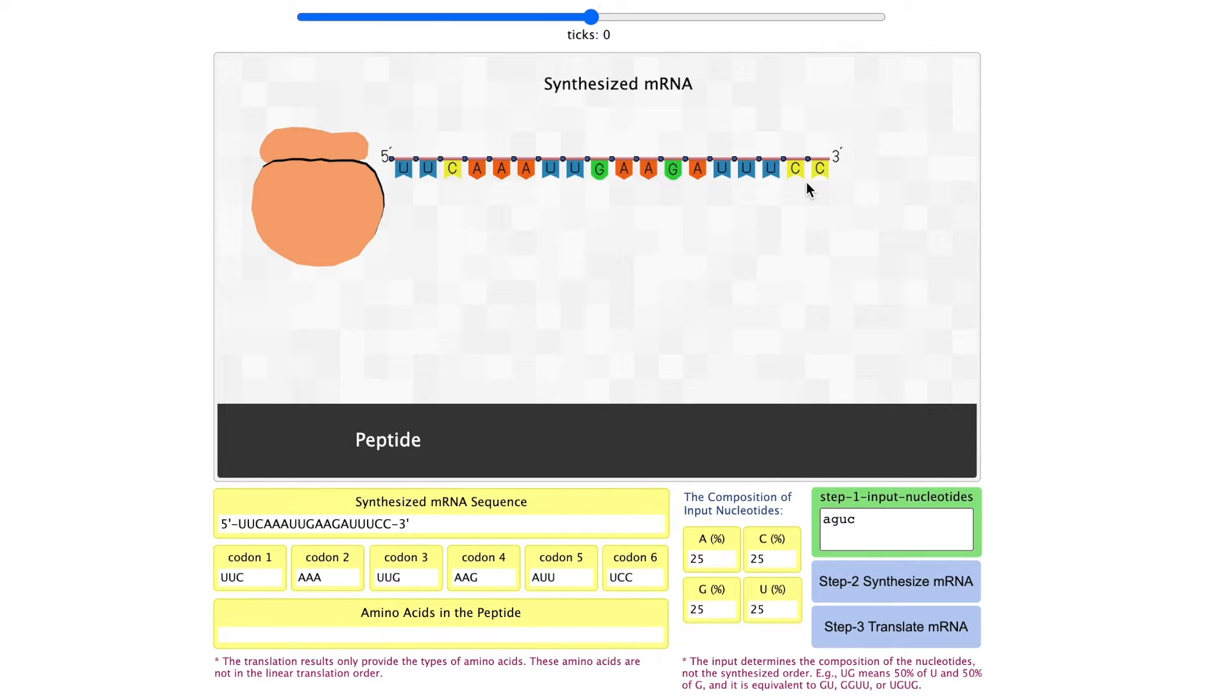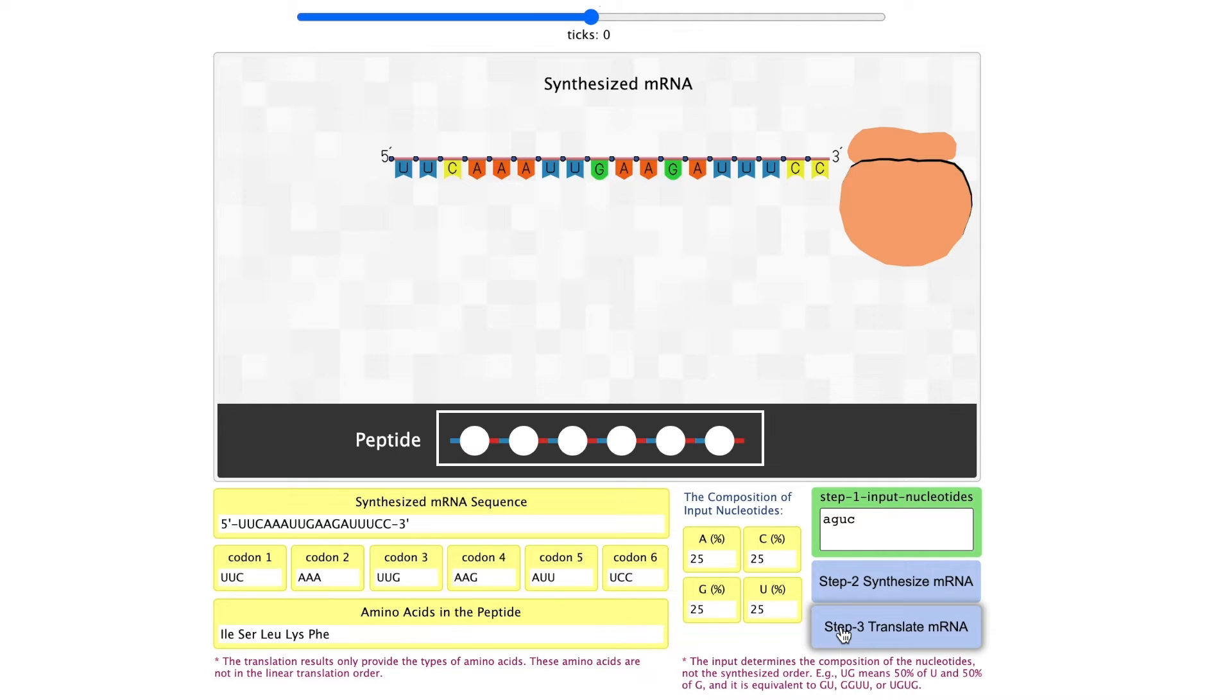Then you can translate the mRNA. A peptide will be displayed in the simulation window. The amino acids incorporated into the peptide will be displayed in the monitor below. Note, these amino acids are not displayed in the order when they are synthesized, so you have to infer which codon they are associated with.